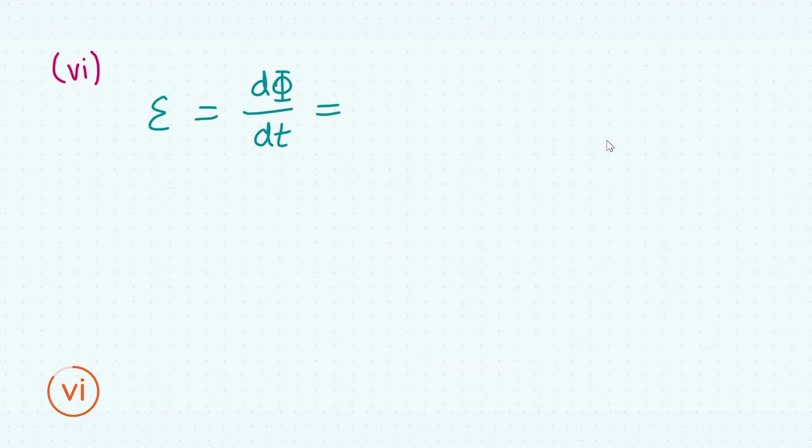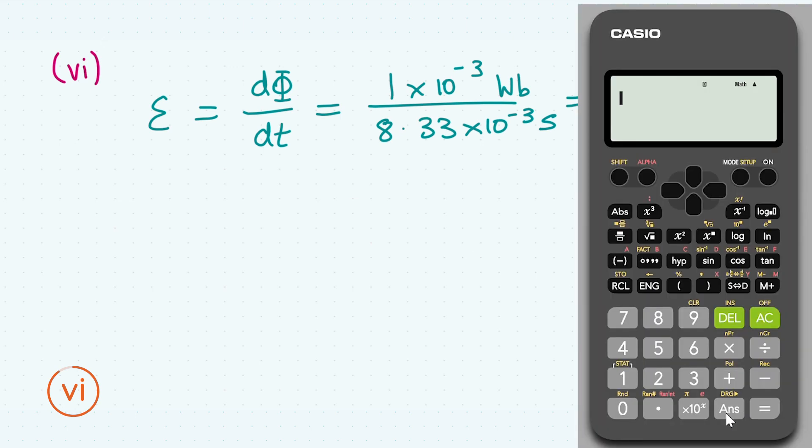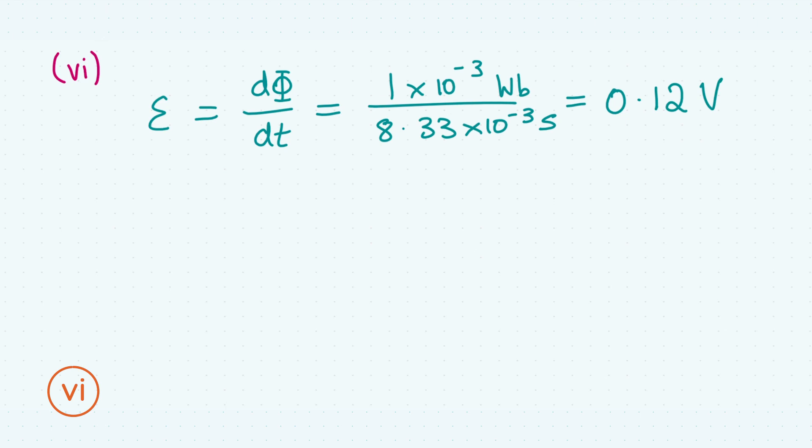Now to find the average EMF, we have that the average magnetic flux is 1 times 10 to the power of minus 3 Weber, and the time interval is 8.33 times 10 to the power of minus 3 seconds. Remember, we stored the time interval as an answer, which is very important because you don't want to be typing out that long decimal places. It ensures maximum accuracy. Being very careful now when you're inputting everything that you have correct scientific notation and your indices and all that. And there we have it, 0.12 is our answer, given as 0.12 volts. Not forgetting your units, you will lose marks, and giving us our final three marks.